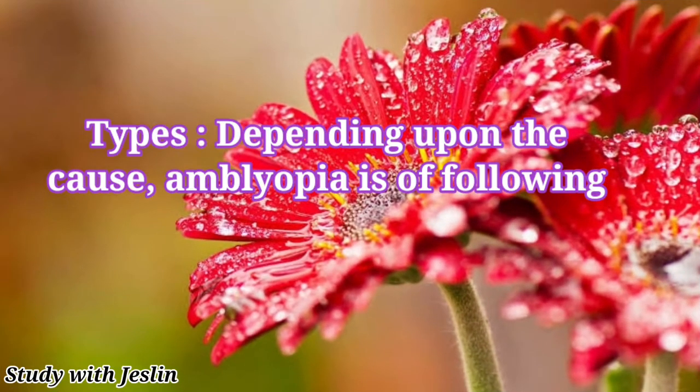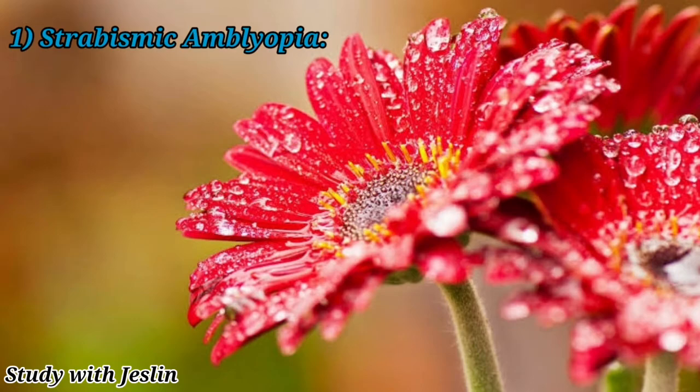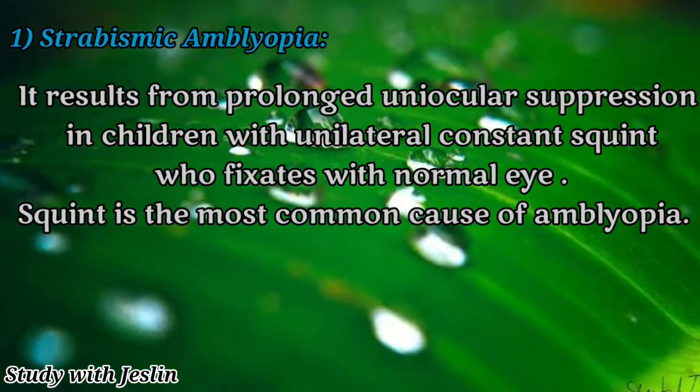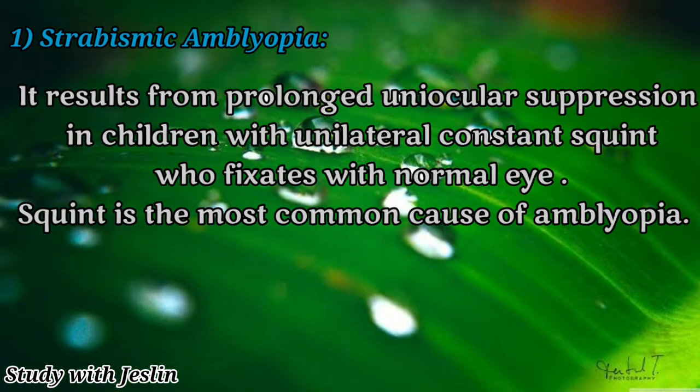Let's talk about the causes and types of amblyopia. The first one is strabismic amblyopia. It results from prolonged monocular suppression in children with unilateral constant squint who fixate with the normal eye. Squint is the most common cause of amblyopia.